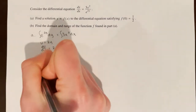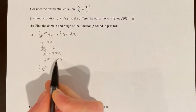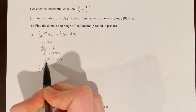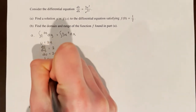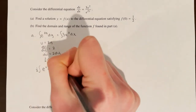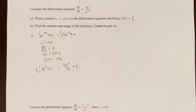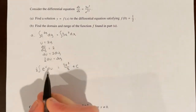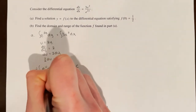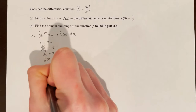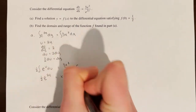Rewriting, I have the integral of e^u times (1/2)du. Pulling out the 1/2, and integrating the right side gives 3x³/3 + c = x³ + c. Integrating the left side gives (1/2)e^u, and substituting back u = 2y gives (1/2)e^(2y) = x³ + c.